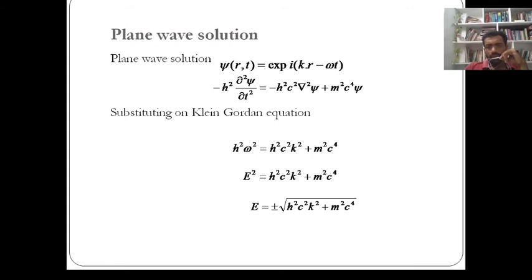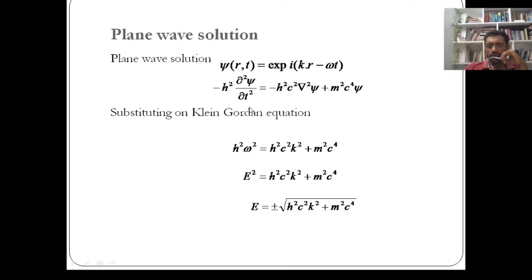Now I am going to find ∂²ψ/∂t². For a plane wave solution, ∂²ψ/∂t² gives (−iω)(−iω) = i²ω² · e^{i(k·r − ωt)}, that is i²ω²ψ. Similarly, ∇²ψ = i²k²ψ. Since i² = −1, the minus signs cancel in both terms, and substituting into the Klein-Gordon equation we get: ℏ²ω² = ℏ²c²k² + m²c⁴.